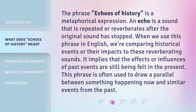The phrase 'Echoes of History' is a metaphorical expression. An echo is a sound that is repeated or reverberates after the original sound has stopped. When we use this phrase in English, we're comparing historical events or their impacts to these reverberating sounds. It implies that the effects or influences of past events are still being felt in the present. This phrase is often used to draw a parallel between something happening now and similar events from the past.